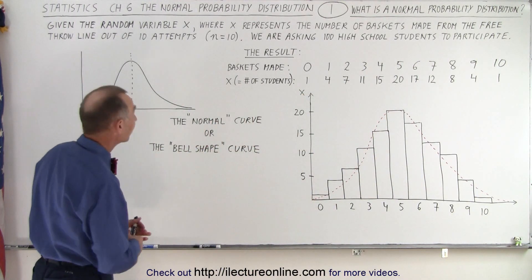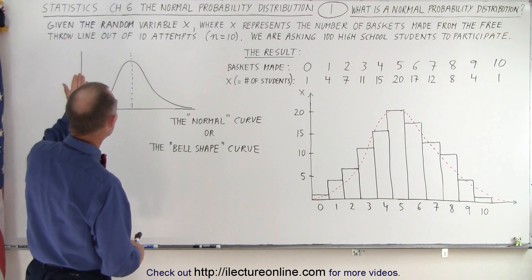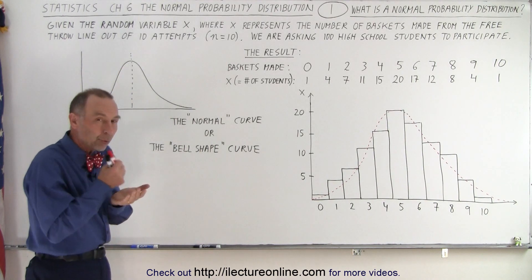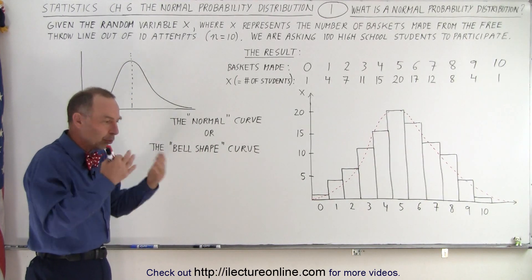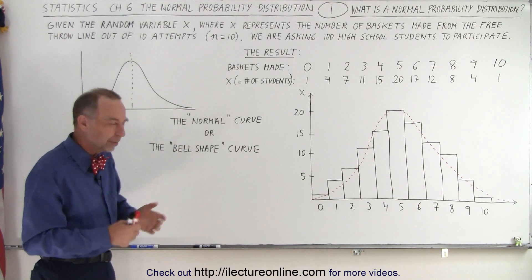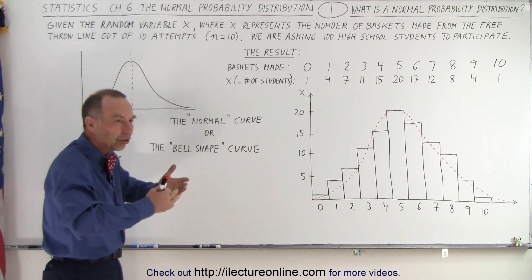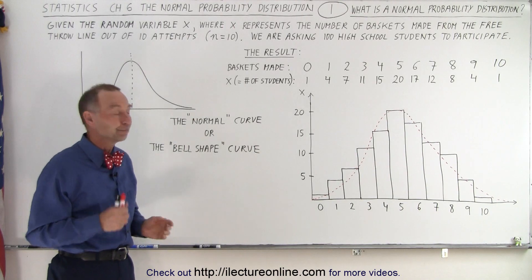All right, now, what does this curve represent? Well, given the random variable x, so you have to have a random variable. You're going to pull something, or you're going to try something, test something, do some experiment, and the results can be completely random.